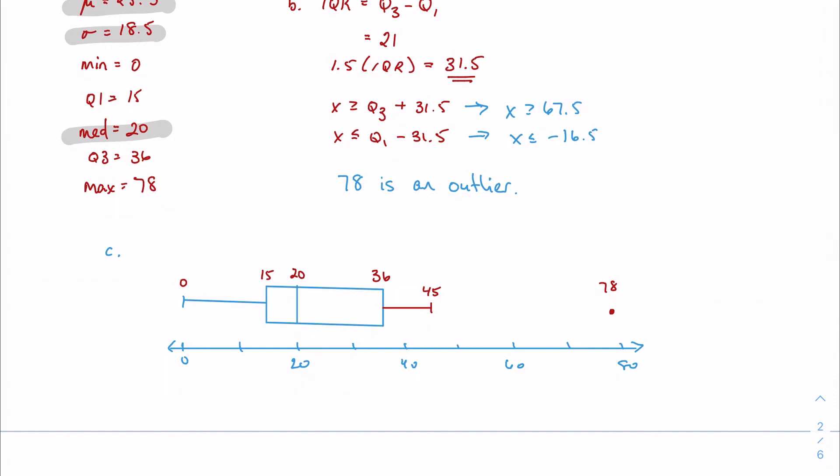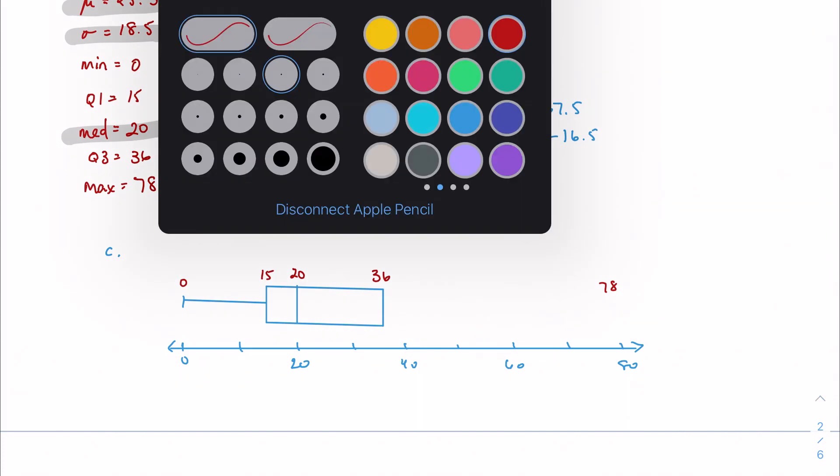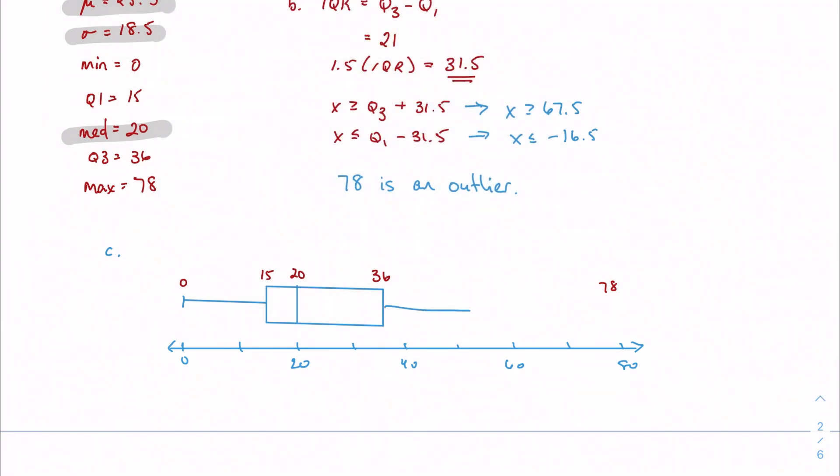But remember, IB doesn't really want this. IB just wants my normal box plot, which is fine. But again, if you're doing any sort of research for an IA, you might come across what we call a modified box plot with the isolated outliers. So I just want to make sure you know what it is if you're looking at it.